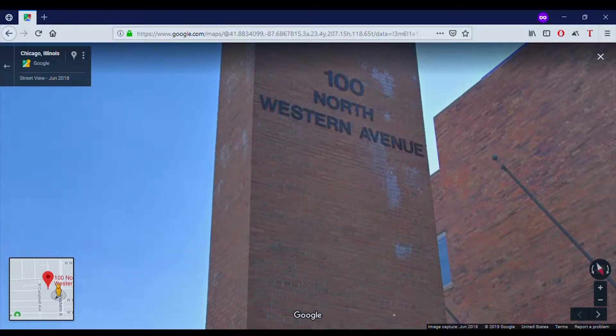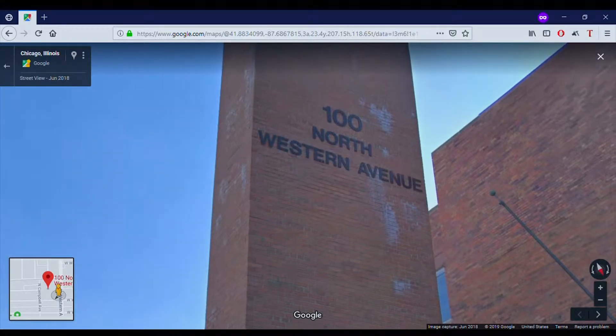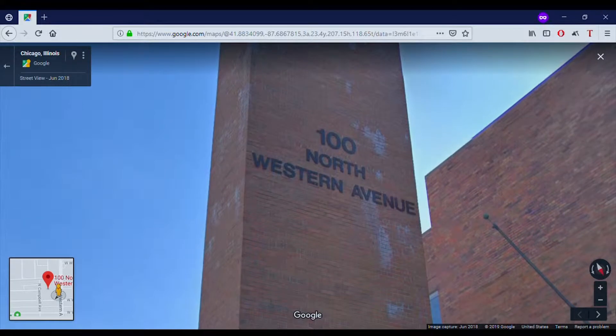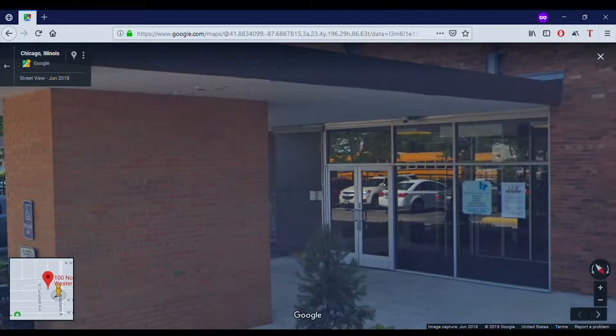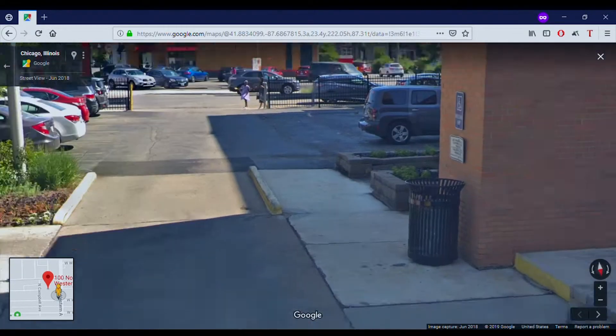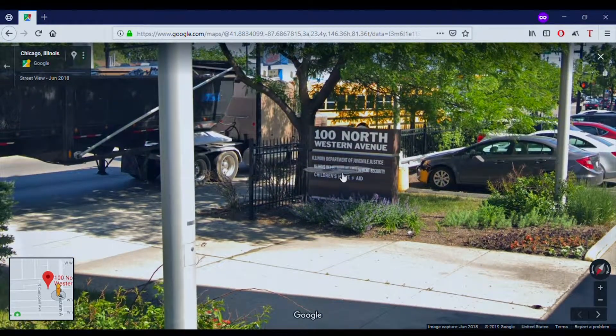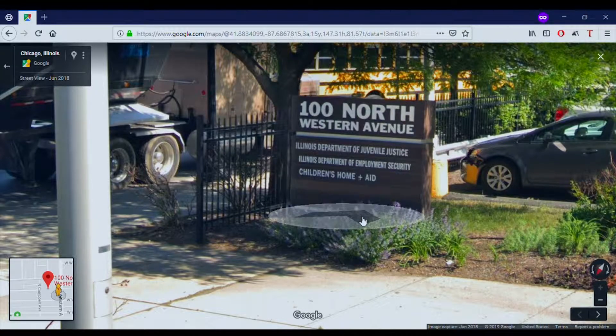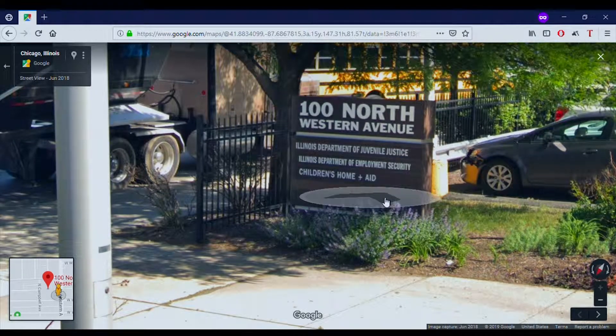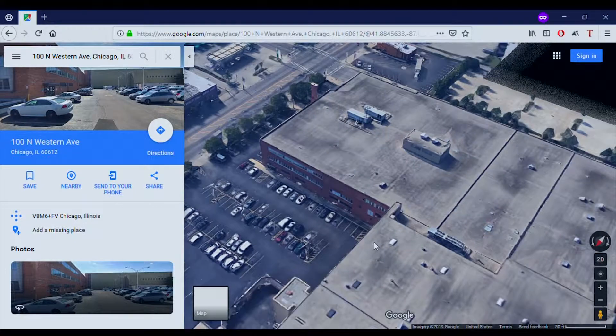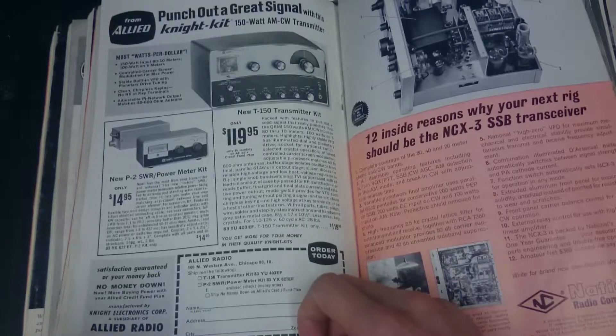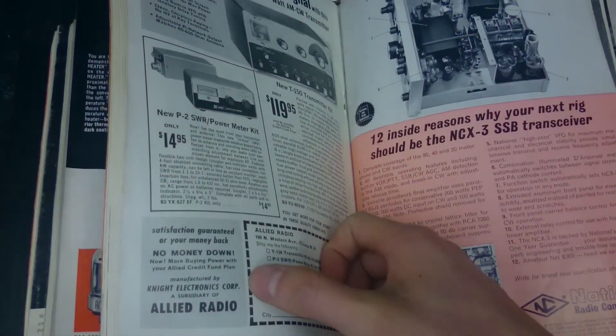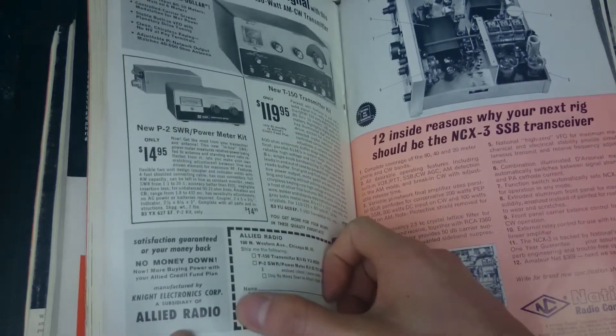I was curious what happened to Knight at 100 Northwestern Avenue. Here's the building in Google Maps. There is no more mention of Allied Radio or Knight, and in fact, 100 Northwestern Avenue is now the Illinois Department of Juvenile Justice, Illinois Department of Employment Security, and a children's home. Obviously Allied Electronics is not here anymore.